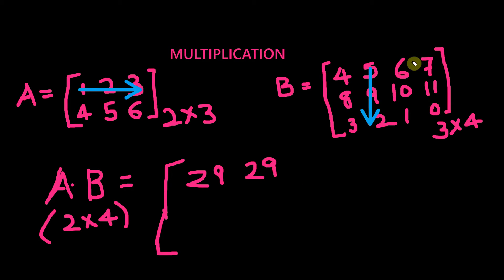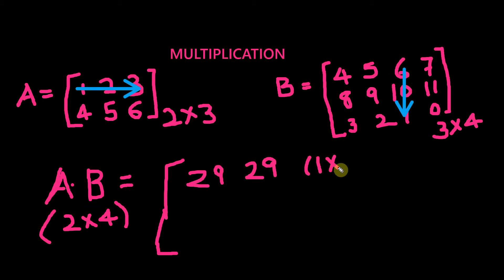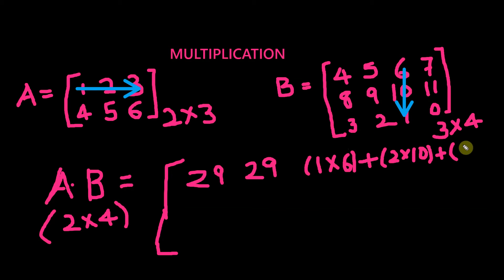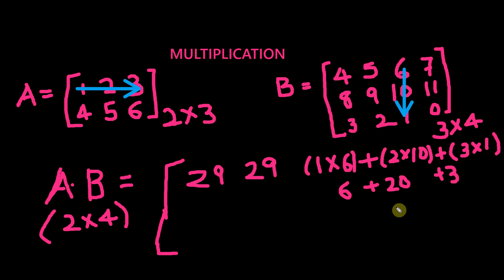Let's move on to the first row, third column value. We need to multiply 1, 2, 3 with 6, 10, 1. So 1×6 plus 2×10 plus 3×1 gives us 6 plus 20 plus 3. The sum is again 29.